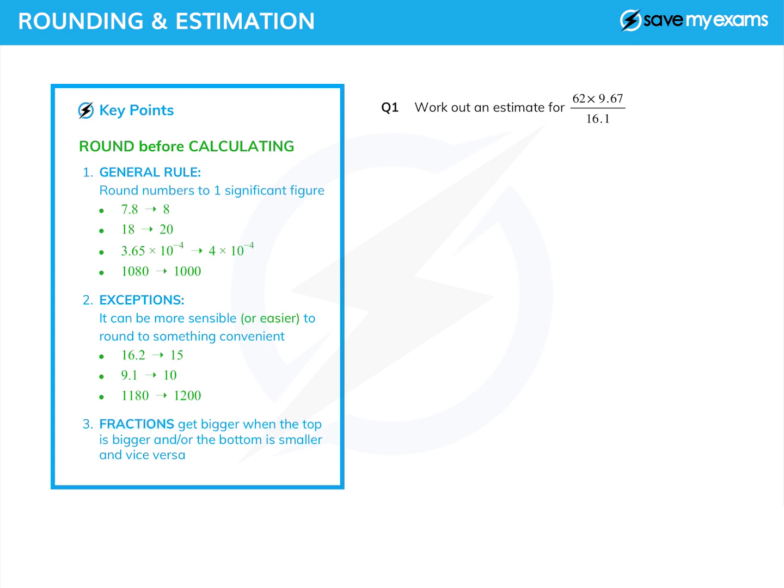First of all, we're going to work out an estimate for 62 times 9.67 divided by 16.1. So that is approximately equal to, well 62 to one significant figure becomes 60, and 9.67 fairly obviously let's round that to 10.